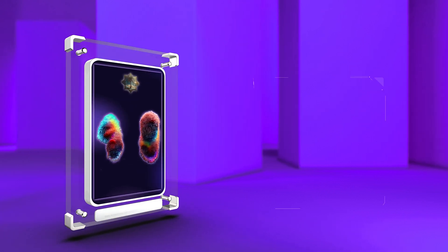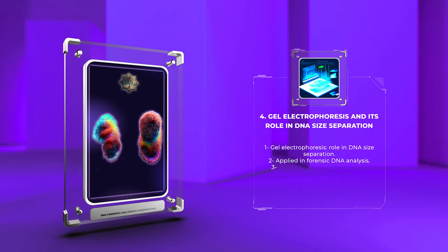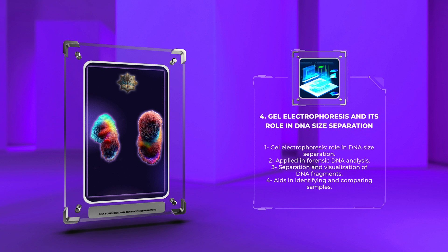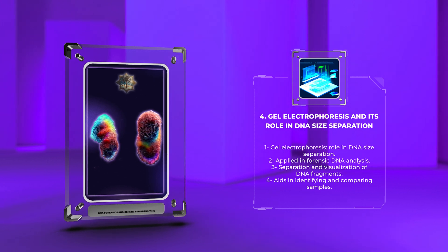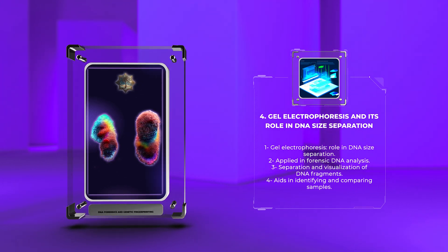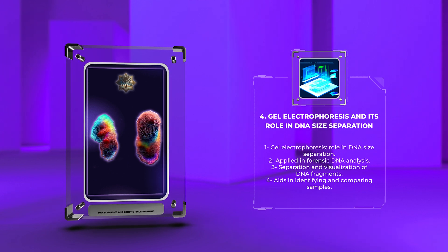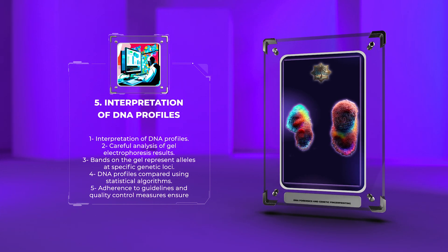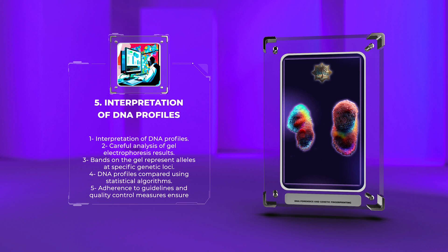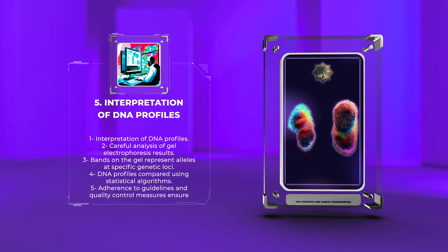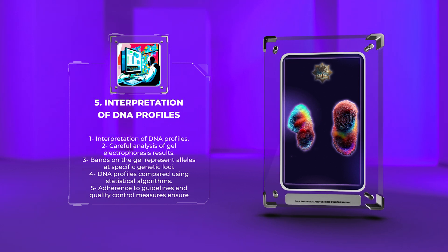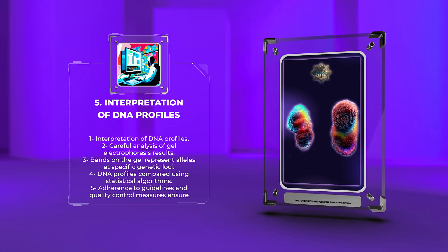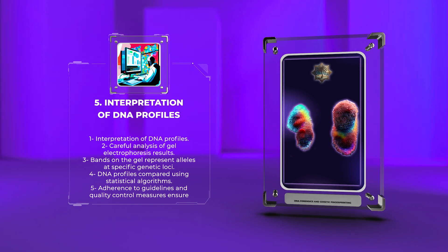In this section on gel electrophoresis and its role in DNA size separation, we explore how this technique is applied in forensic DNA analysis. Gel electrophoresis allows for the separation and visualization of DNA fragments, aiding in identifying and comparing samples. Interpretation of DNA profiles involves careful analysis of gel electrophoresis results to determine genetic variations. Bands on the gel represent alleles at specific genetic loci. DNA profiles are compared using statistical algorithms to calculate the chance of a match, and adherence to guidelines and quality control measures ensures accuracy and reliability.